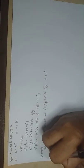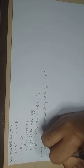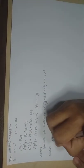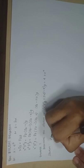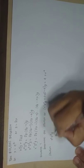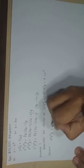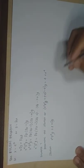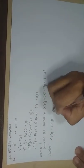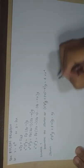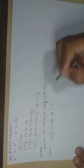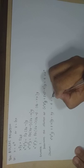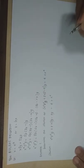For the solution, the first thing we have to do is distribute y inside the parenthesis. So we have x²D²y + 2x·Dy − 2y = 4 + x².